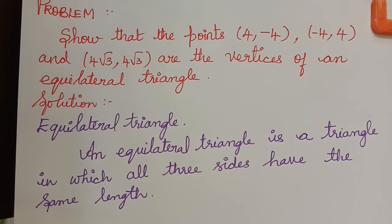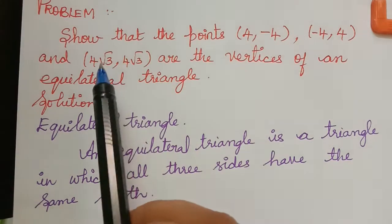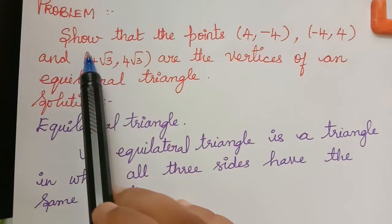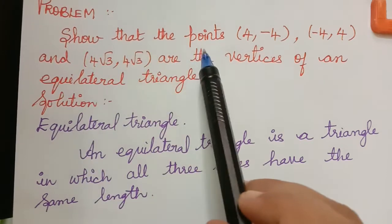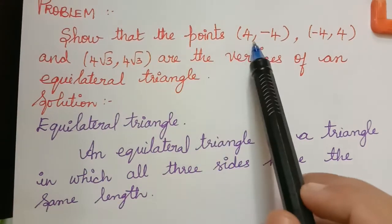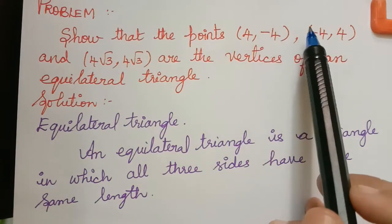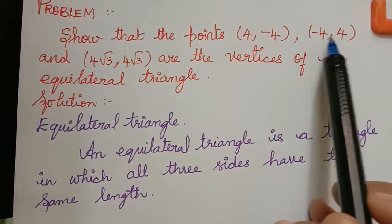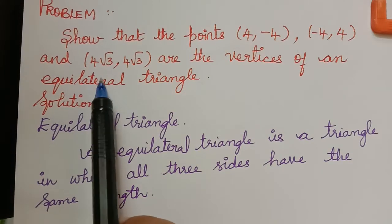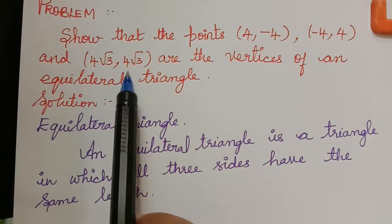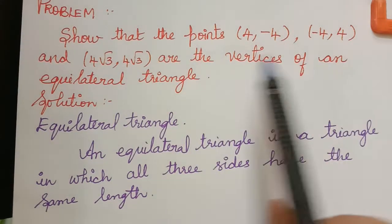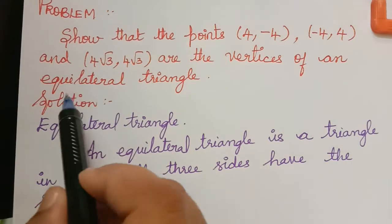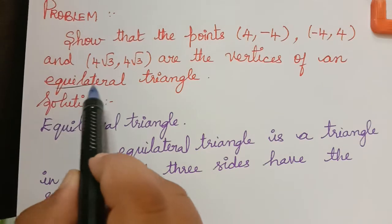Hello students. The next problem under the topic coordinate geometry is: show that the points (4, -4), (-4, 4), and (4√3, 4√3) are the vertices of an equilateral triangle.